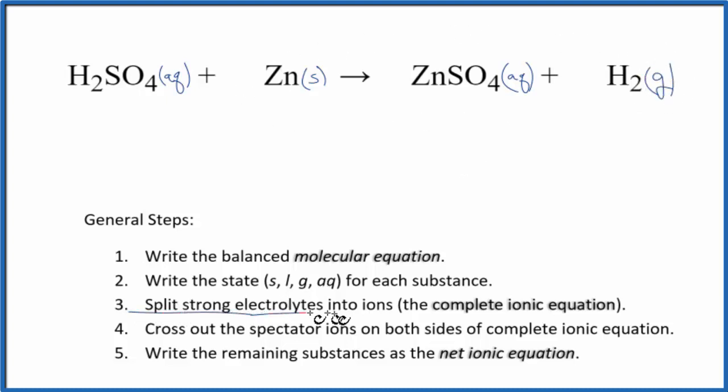Now we can split the strong electrolytes apart into their ions to give us the complete ionic equation. So we said H2SO4 is a strong electrolyte. Hydrogen is in group one, so it has one plus ions. And then this whole sulfate ion, SO4, is always two minus. Good one to remember. Two hydrogen ions. And I won't write the states after each one right now. Let's do that at the end. And then we have one sulfate ion.